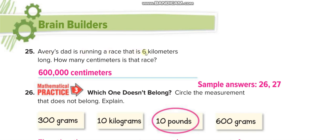Ever's dad is running a race that is six kilometers long — how many centimeters is that? First, convert kilometers to meters: one kilometer is one thousand meters, so six kilometers equals six thousand meters. Then convert meters to centimeters: one meter equals one hundred centimeters, so six thousand meters times one hundred equals six hundred thousand centimeters.